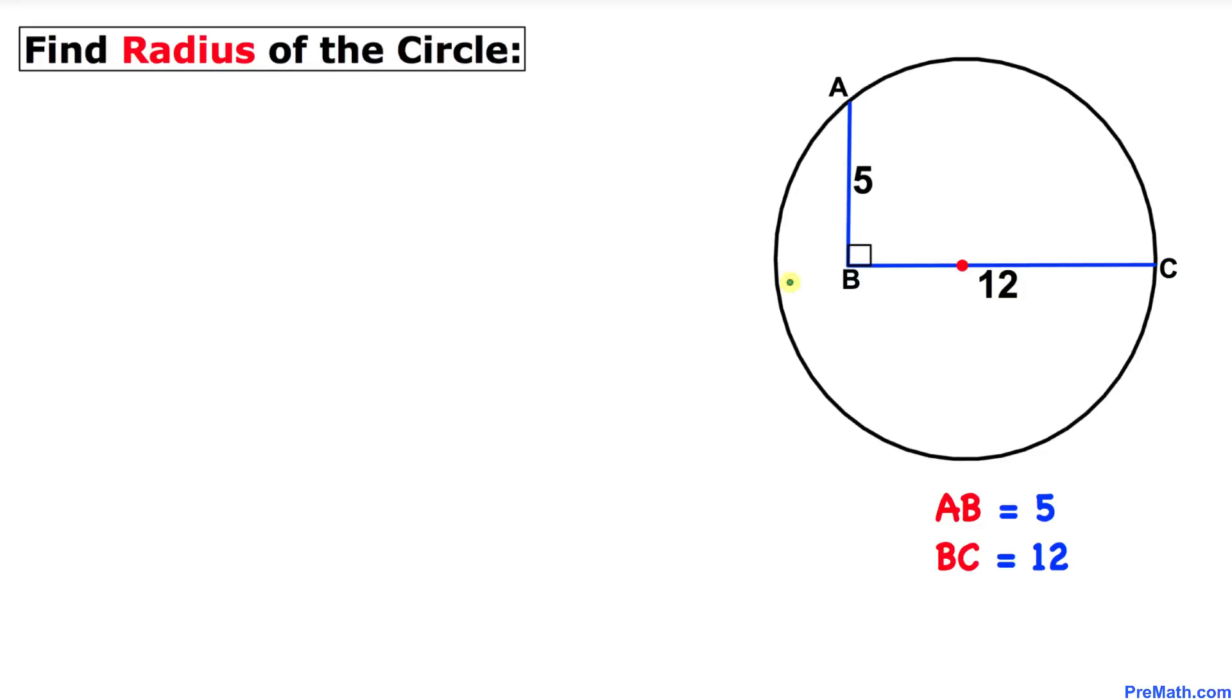Welcome to PreMath. In this video tutorial we have two line segments AB and BC that are perpendicular to each other. Line segment AB is 5 units, while line segment BC is 12 units. This line segment BC passes through the center of the circle, and now we are going to calculate the radius of this given circle.